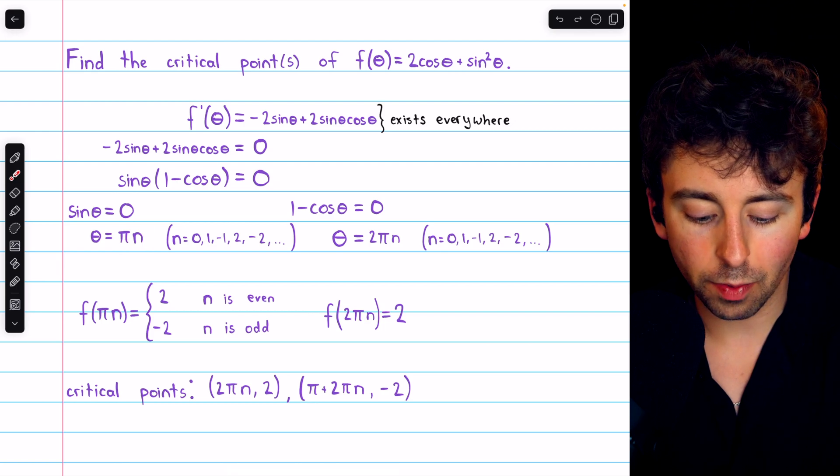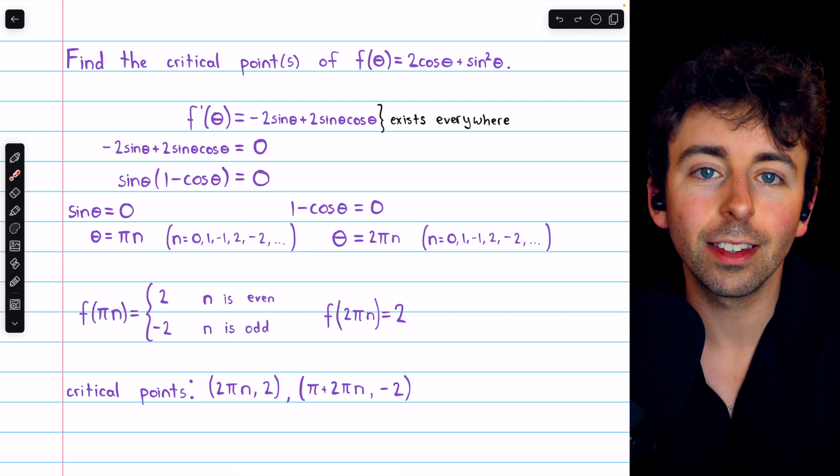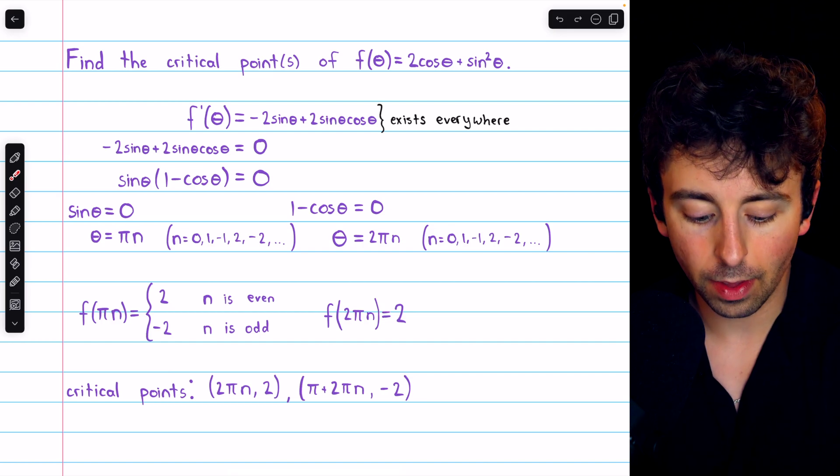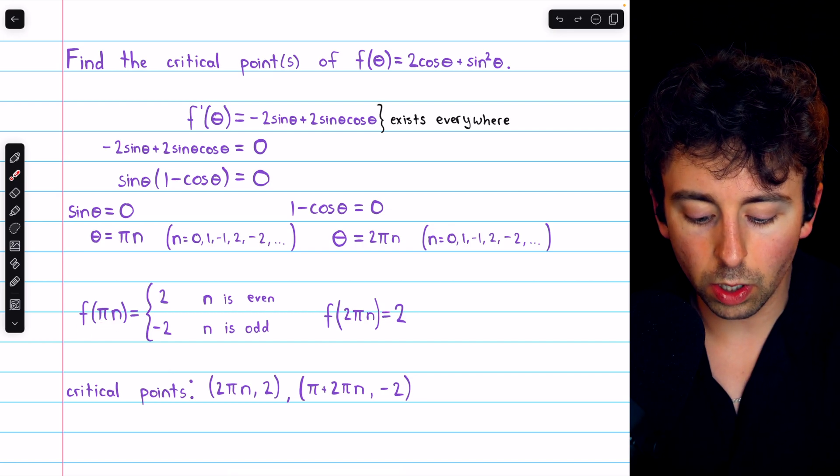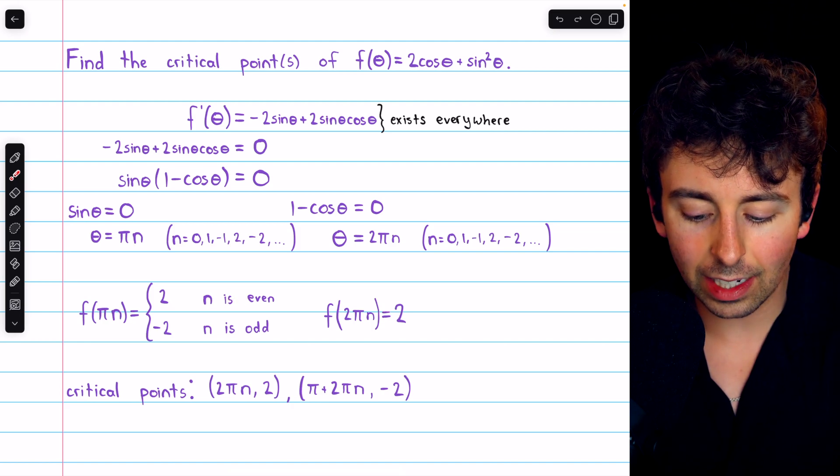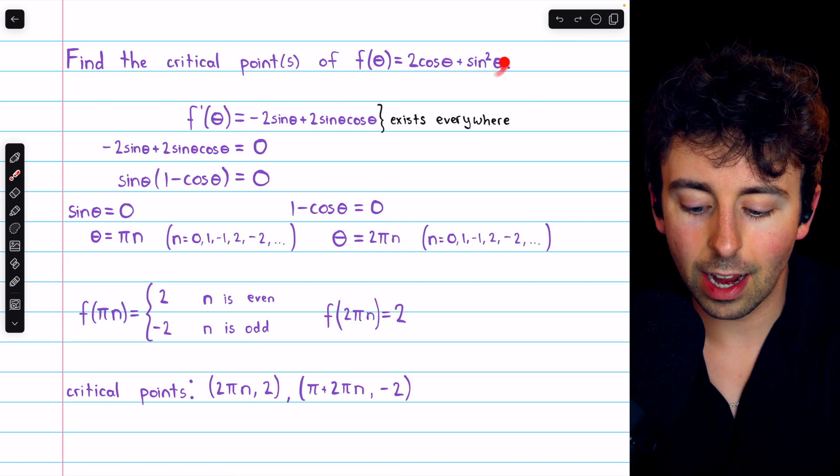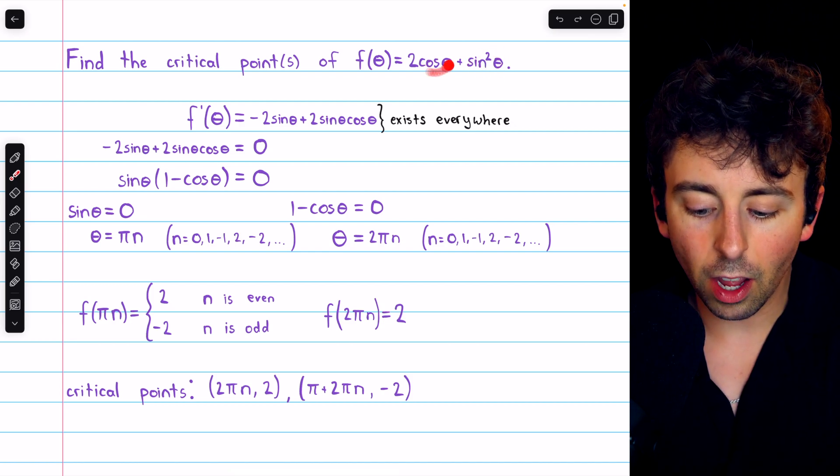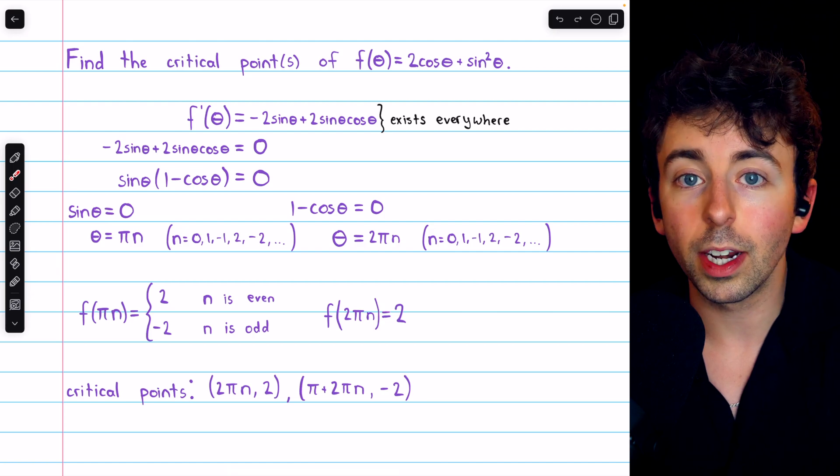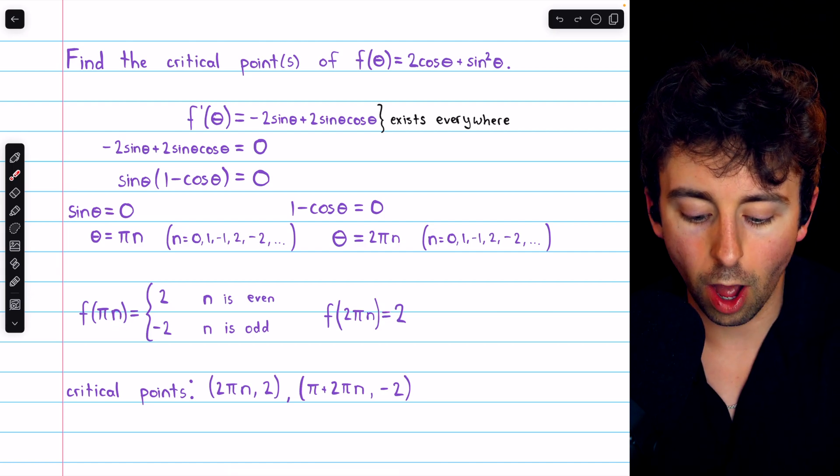We can then plug that into our function and see how it behaves to find those y coordinates of our critical points. f(πn), it turns out, is equal to 2 when n is even and -2 when n is odd. This is because the sine part of the function is just 0 at multiples of π, and the cosine will be alternating between 1 and -1, depending on whether or not n is even or odd.